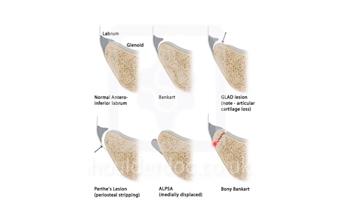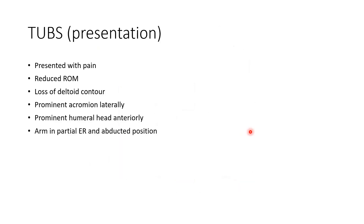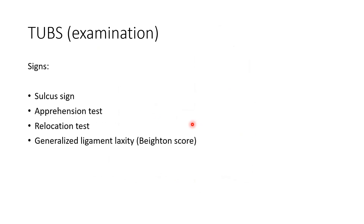Presentation usually includes pain, reduced range of motion, loss of deltoid contour, prominent acromion laterally, prominent humeral head anteriorly, and the arm usually in a partially externally rotated and adducted position. Examination-wise, some signs include the sulcus sign, apprehension test, relocation test, and the Beighton score at the end of examination.